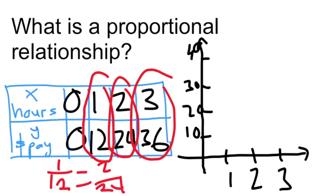Now if I graph a proportional relationship, you see that it goes through 0,0, 1,12, 2,24, 3,36.